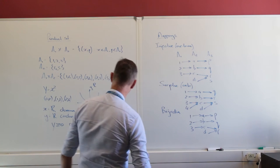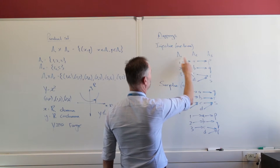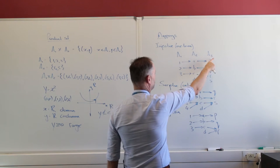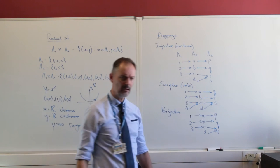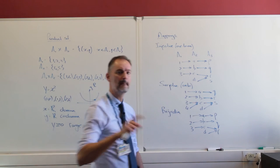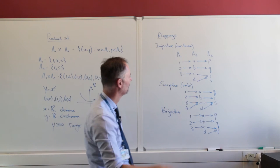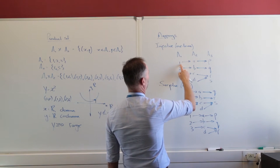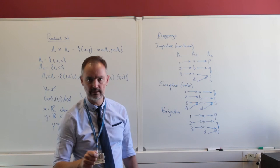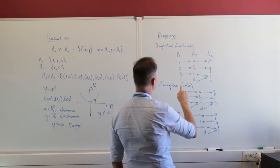Let's start with an injective function. I'm going to use smaller sets. A sub 1 has three elements: {1, 2, 3}. A sub 2 has four elements: {A, B, C, D}. An injective mapping means every element in the codomain has at most one element in the domain mapping to it. Look at this: A only has one element from A sub 1 mapping to it, B only has one, C only has one, and D has nothing. So it's one or nothing — that's a one-to-one, or injective, mapping.